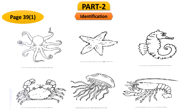Now, please open page 39, question number one. There are some animals that live under the sea and we will identify them and write their names. In the left part, there is an animal with a round-shaped head and many finger-like arms — the name is octopus. In the middle, the fish looks like a star, so it is called starfish.